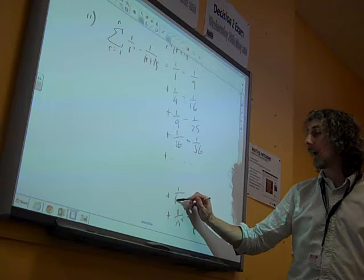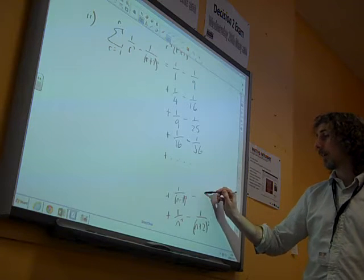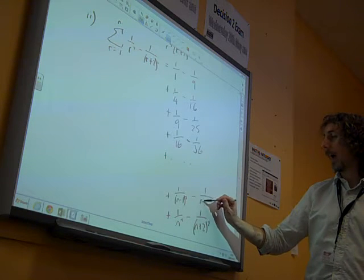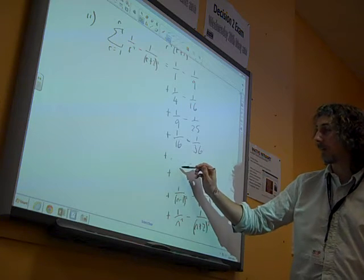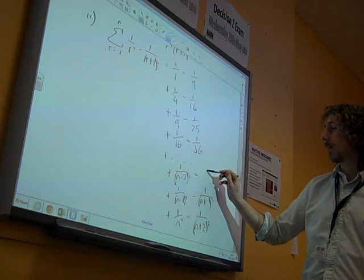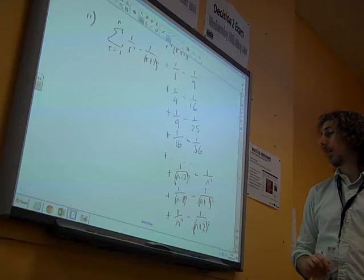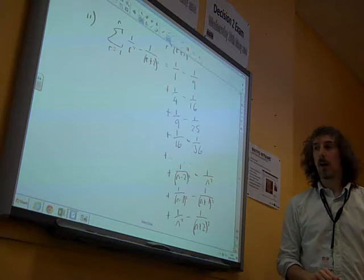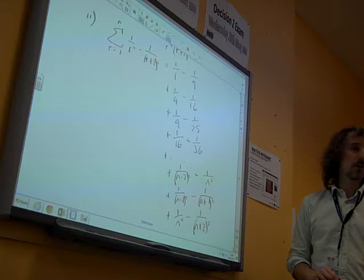So the last term would be 1 over n squared minus 1 over n plus 2 squared. The term before that would be 1 over n minus 1 squared, minus 1 over n plus 1 squared. And the term before that would be 1 over n minus 2 squared, minus 1 over n squared.